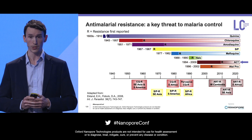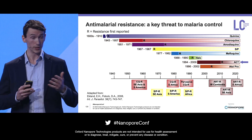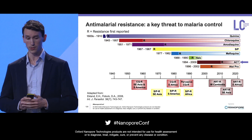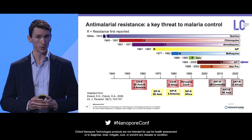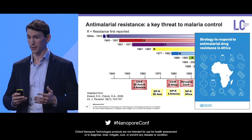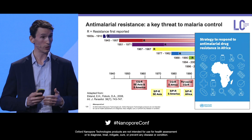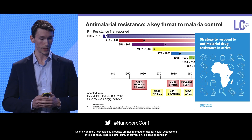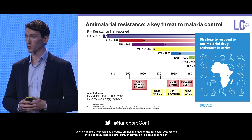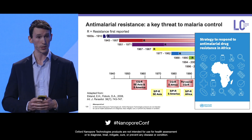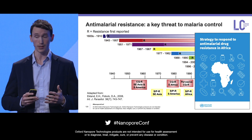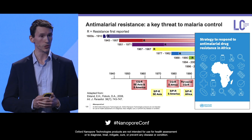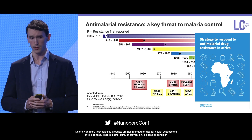Resistance was first reported — or at least partial resistance — in Southeast Asia in the late 2000s, and in the last couple of years has been reported in East Africa. The WHO has highlighted this as a major issue and released a technical document, a strategy to respond to anti-malarial resistance in Africa, highlighting the importance of surveillance in order to monitor for the emergence and spread of resistance.